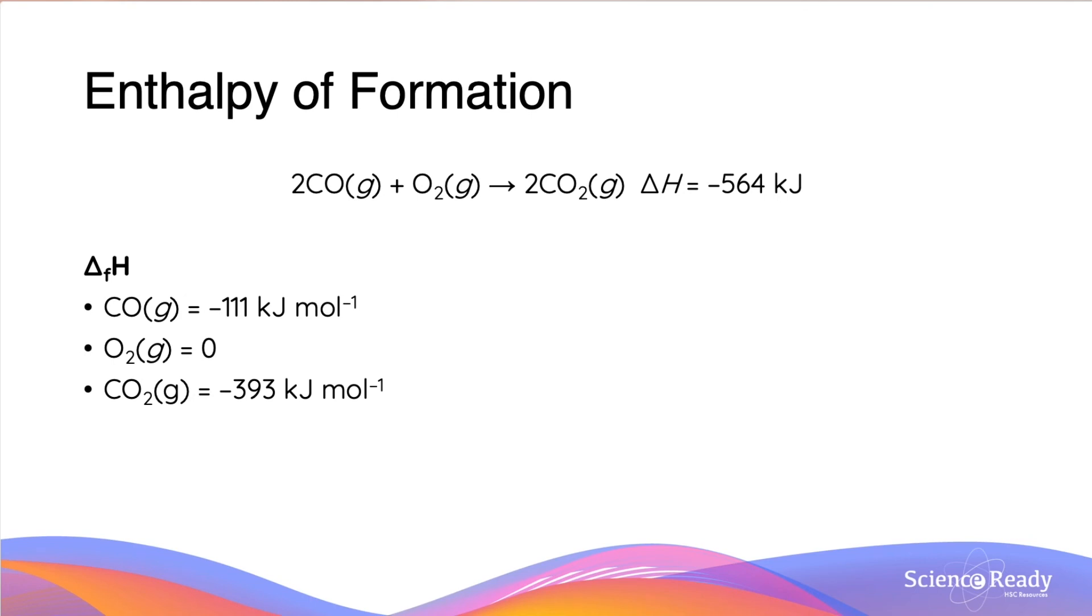Now that we have calculated for CO, and we know that each mole produces 111 kJ, we can subtract 222 from negative 564 and divide the total by 2, hence the stoichiometric ratio, to calculate the enthalpy change of CO2, which would ultimately be minus 393 kJ per mole.